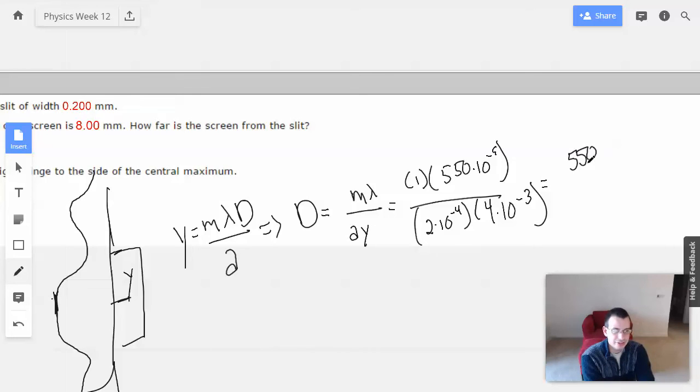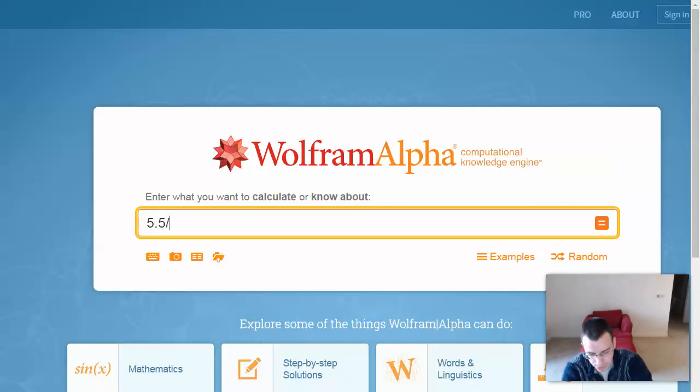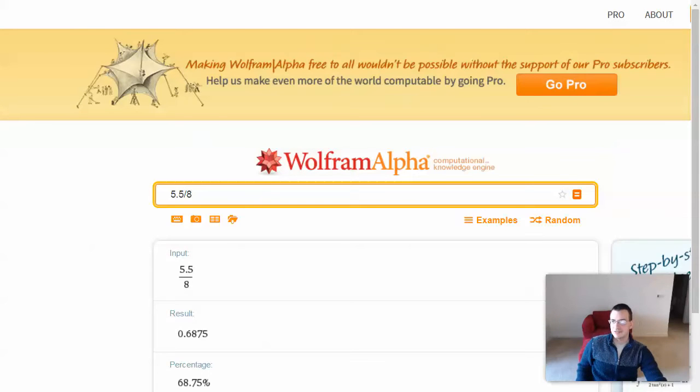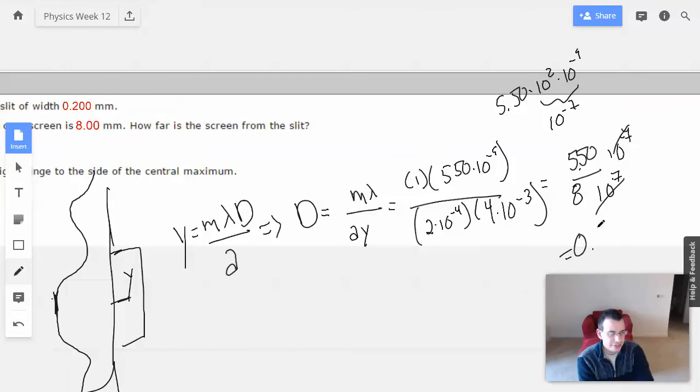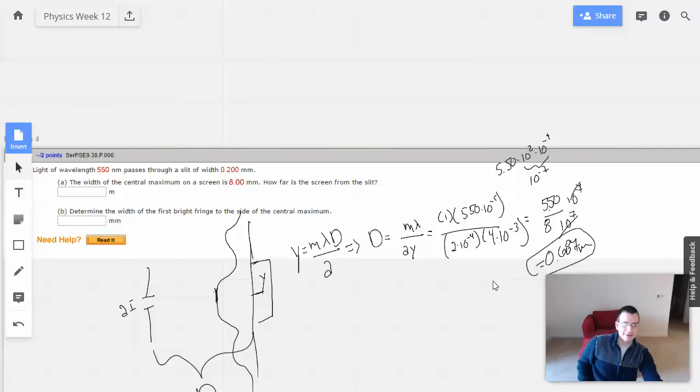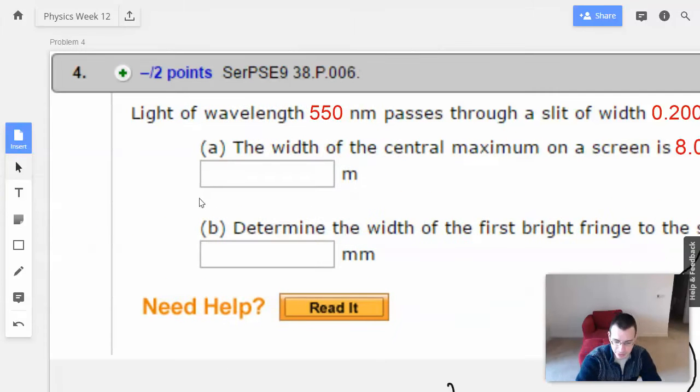Alright, so then we're going to have 550 over 8. I'm going to call this 5.55 times 10 to the negative 7th, because 550 is the same as 5.50 times 10 to the 2nd times 10 to the negative 9th. When their powers combine, 10 to the negative 7th. And then we'll have 8 times 10 to the negative 7th here. And they cancel, and we get 5.5 divided by 8, which everyone knows is .6875 meters.